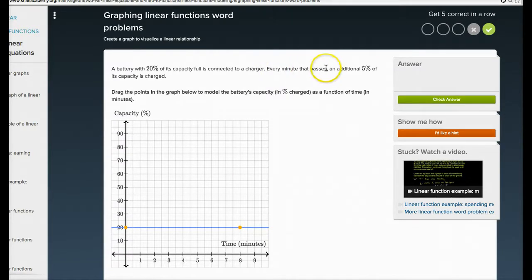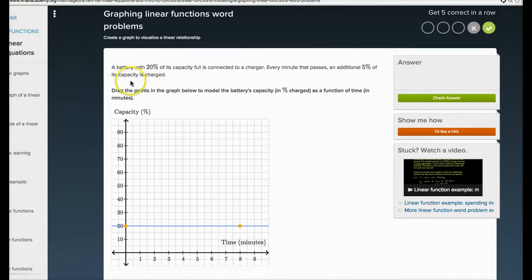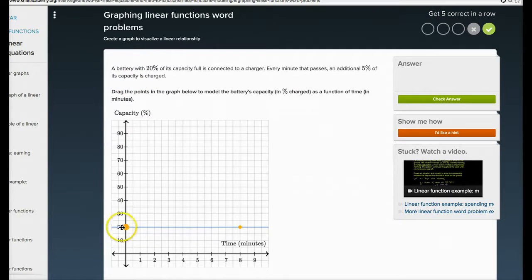Now, for every minute that passes, an additional 5% capacity is charged. This one's actually much easier than the last one because you don't have to do a lot of work. Here's a minute, and it's saying that every minute, 5% is charged. So, I'm just going to go over to one minute, go up 5%, and there you go. So, it tells you, assuming it's linear, which means it follows a line that has the same slope. That's the big deal about linear. The slope is the same. The amount that it goes up or down all the time is equal.